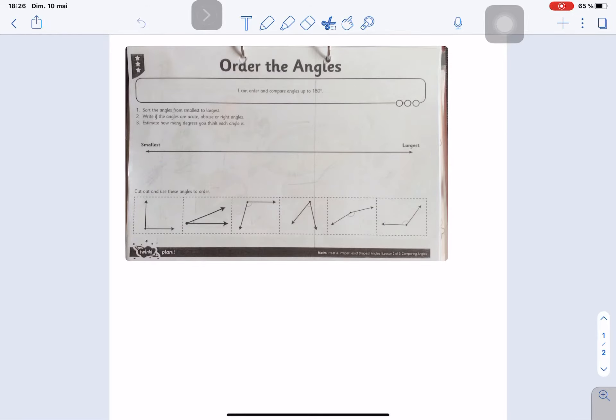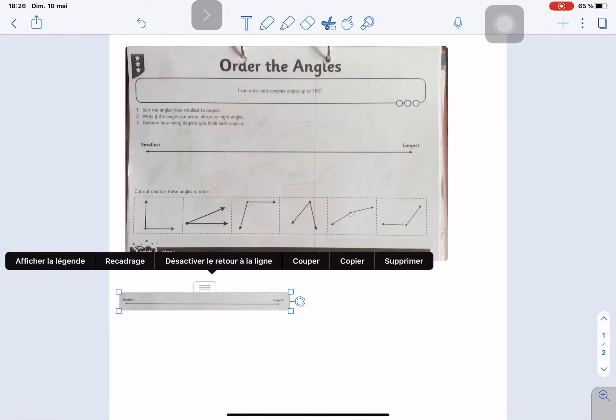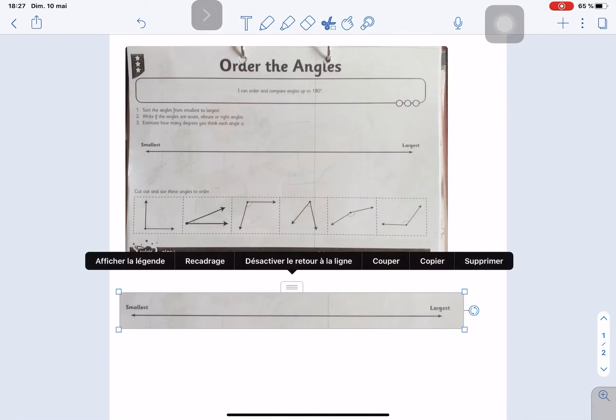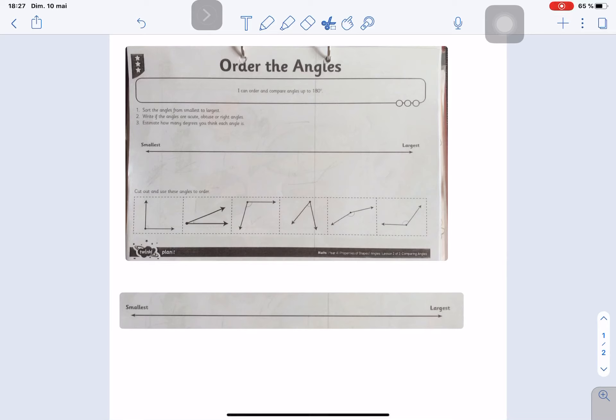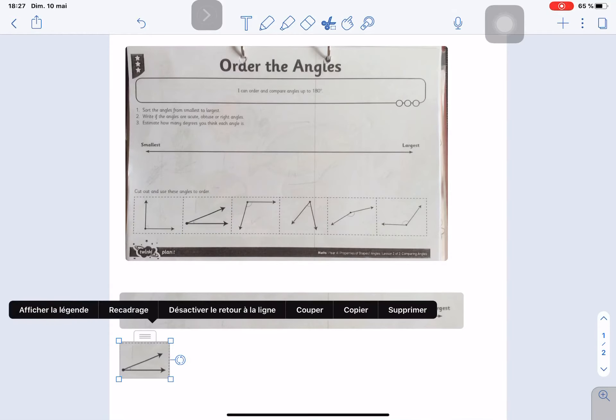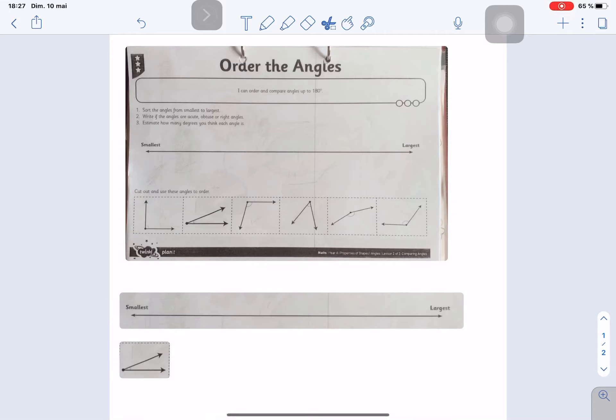I'll copy and paste the line like so, and I will choose what I think is the smallest angle and copy and paste. I will take the second one, which I think is this one, copy and paste, and then I will go straight to the last one and cut, copy, and paste.